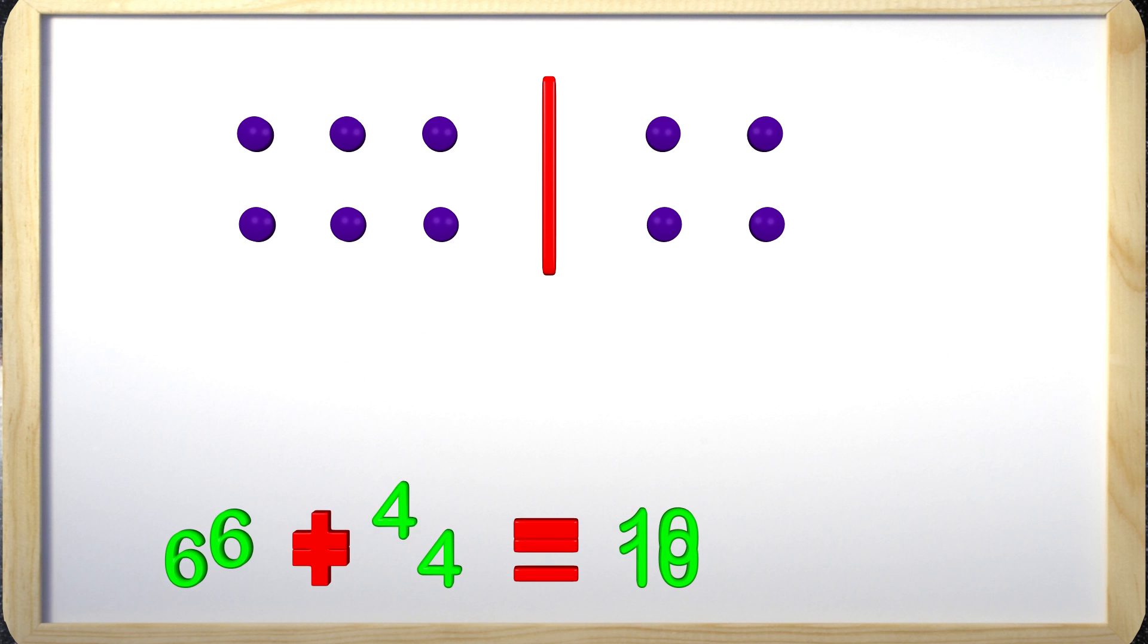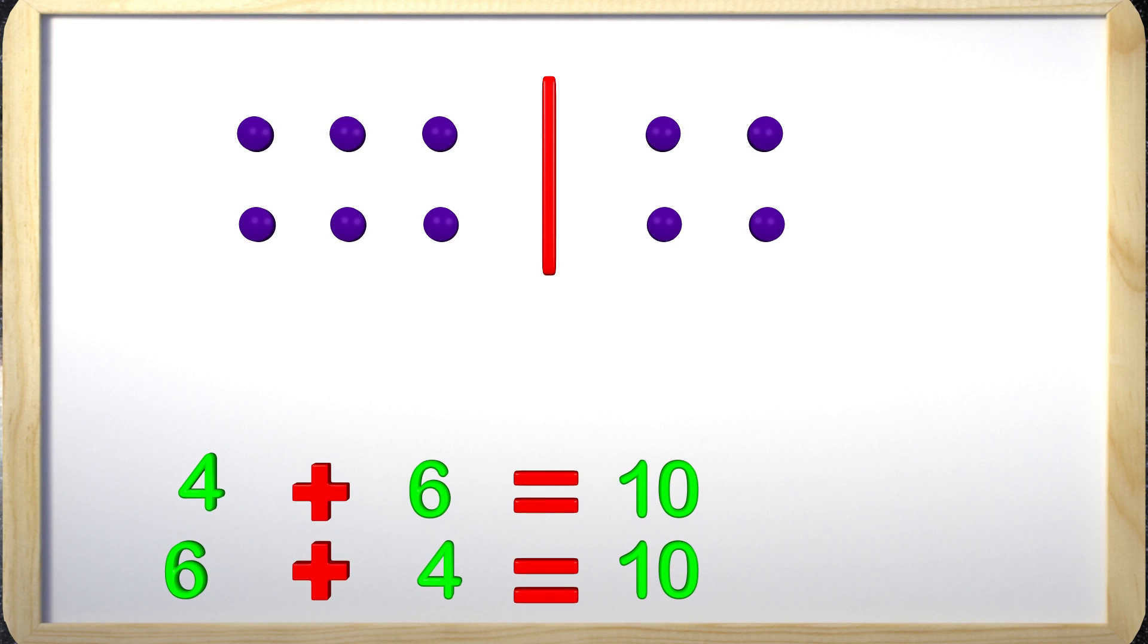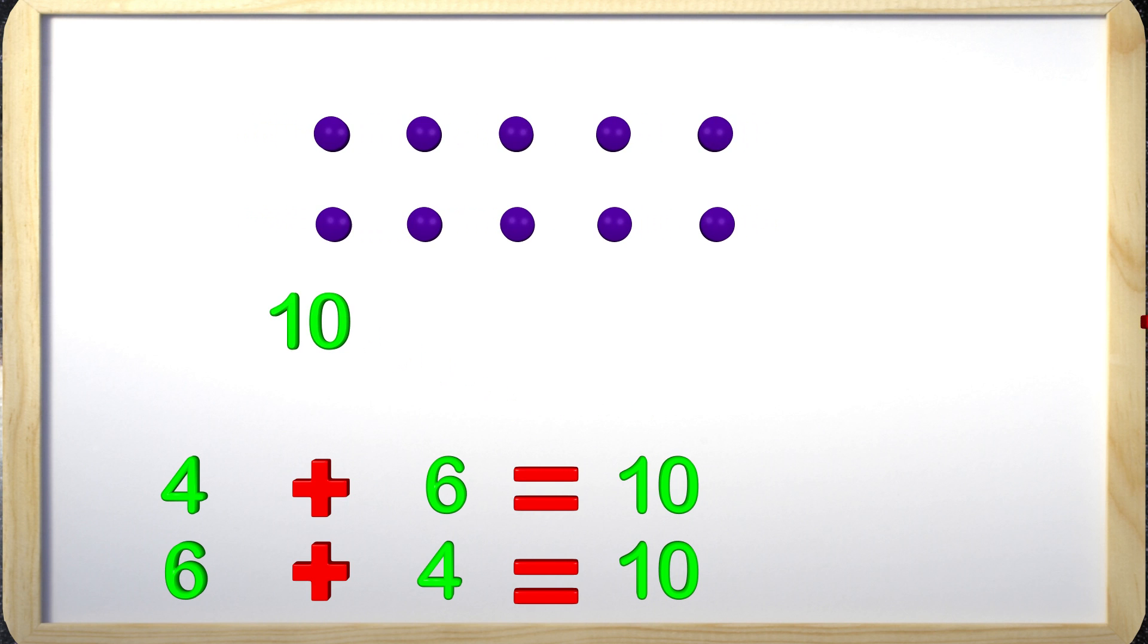What's awesome about this is that we can also switch the two around and get 4 plus 6 equals 10. We can also figure out that if we start with 10 as a group and subtract 6, we will be left with 4. When we start with 10 and take away 4, then you will be left with 6.